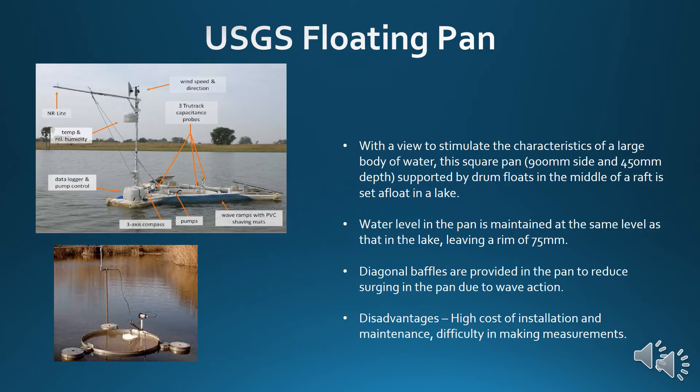The USGS Floating Pan is designed to simulate the characteristics of a large body of water. This square pan, 900 mm to the side and 450 mm deep, is supported by drum floats in the middle of a raft and set afloat in a lake. Water level in the pan is maintained at the same level as that in the lake, leaving a rim of 75 mm. Diagonal baffles are provided in the pan to reduce surging due to wave action. The disadvantages of this pan are high cost of installation, high maintenance, and difficulty in making measurements.